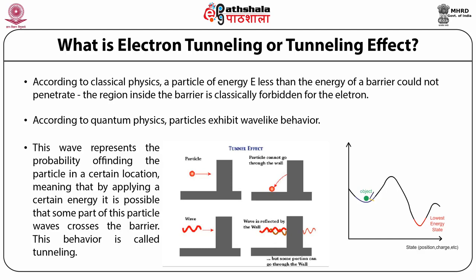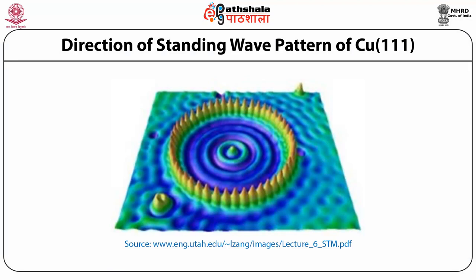This slide explains the tunneling effect in STM. Classically, if one threw a ball at a brick wall, they would always find the ball on their side of the wall. Quantum mechanically, however, the ball has some finite probability of tunneling through the wall — the more energy the ball has, the more likely it will tunnel. The STM images show the direction of the standing wave pattern in the local density of states of the copper (111) surface. This spatial oscillation or quantum mechanical interference pattern is caused by scattering of the two-dimensional electron gas by iron atoms and point defects.